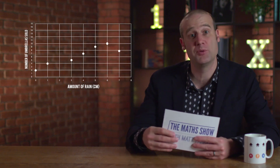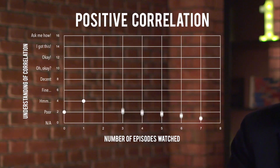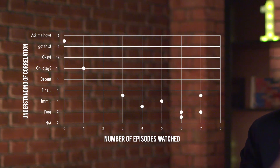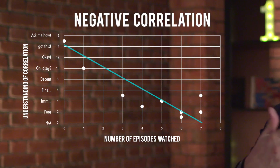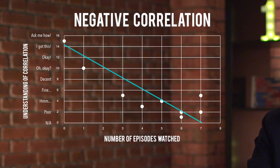Finally, you might be asked to give a real-world description of what your line of best fit shows. For example, you might have to say: this is a positive correlation — as there is more rain, more umbrellas are sold. Or another positive correlation: the more you watch The Math Show with me, Matt Parker, the better you understand correlation. Or: this is a negative correlation — the more you watch The Math Show with me, Matt Parker, the less you understand correlation and statistics.